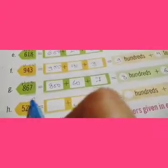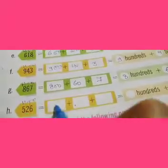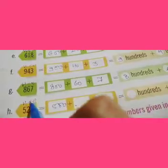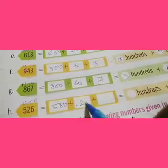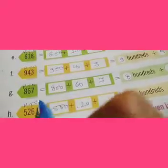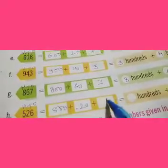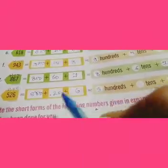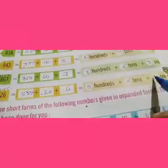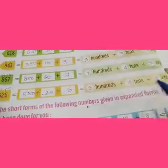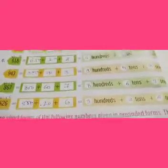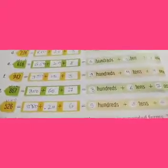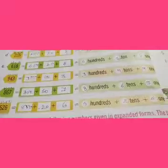Next number: 1's, 10's and 100's. 500's position is 500. 10's position is 2, so we write 20. 1's position is 6, so we write 6. So the expanded form is 500 plus 20 plus 6.